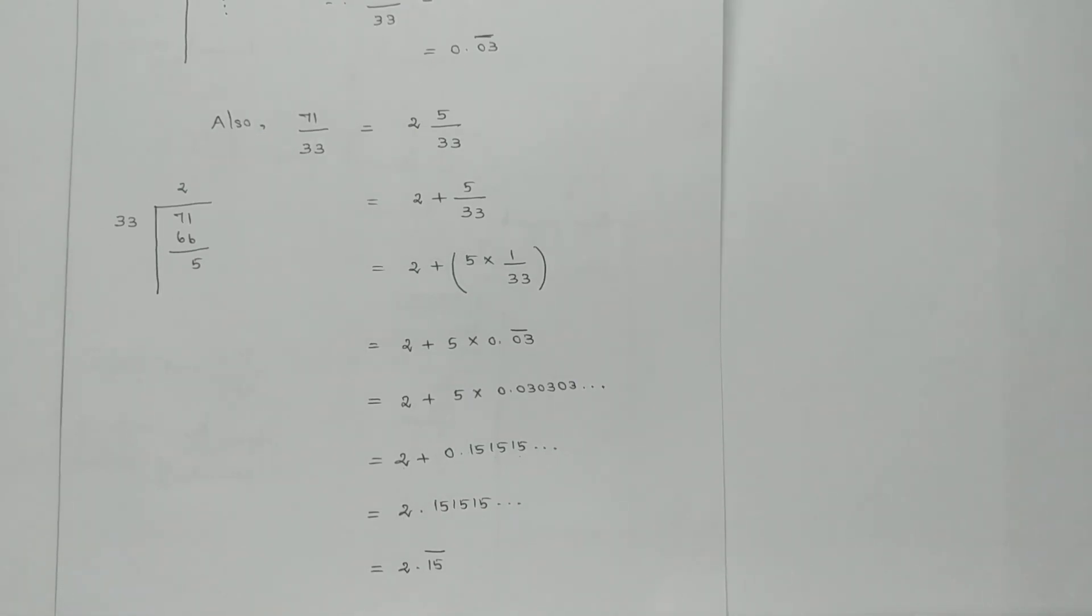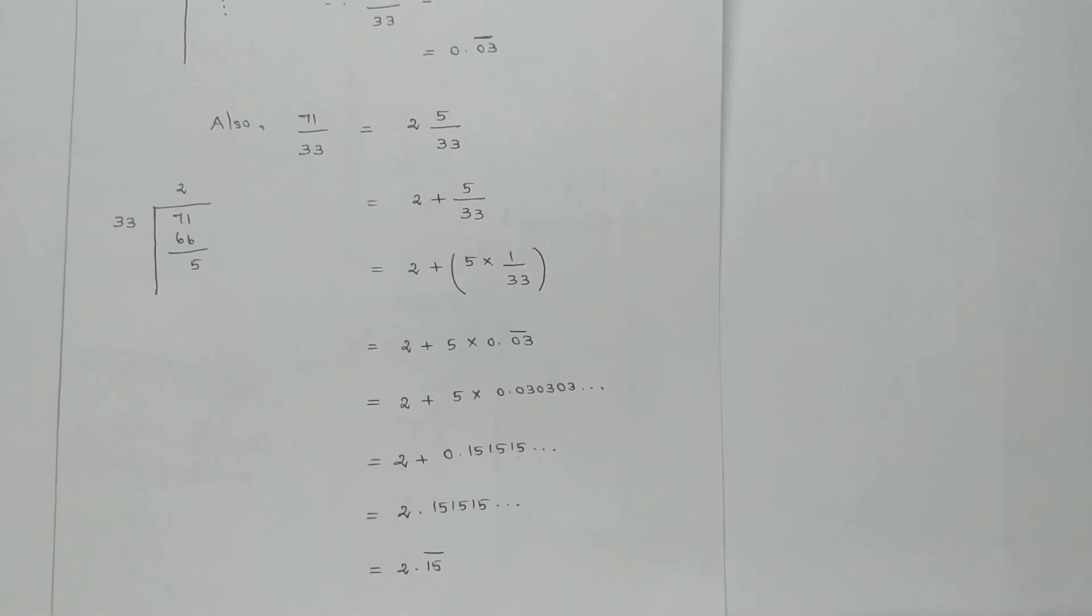2.151515... So 2.151515 repeating, which I write as 2.15 bar, meaning the digits 15 repeat. Okay, so please like the video, share, comment, and subscribe. Thank you.